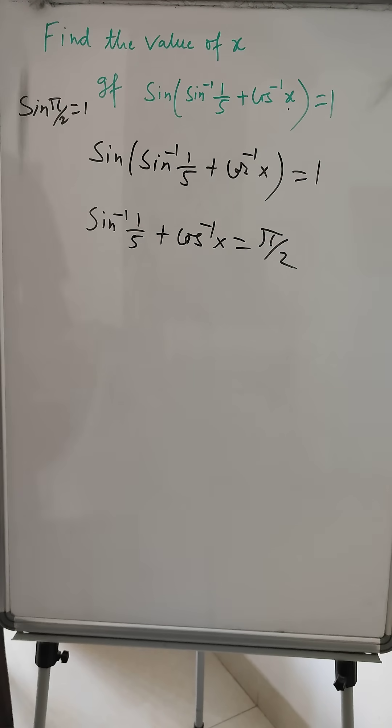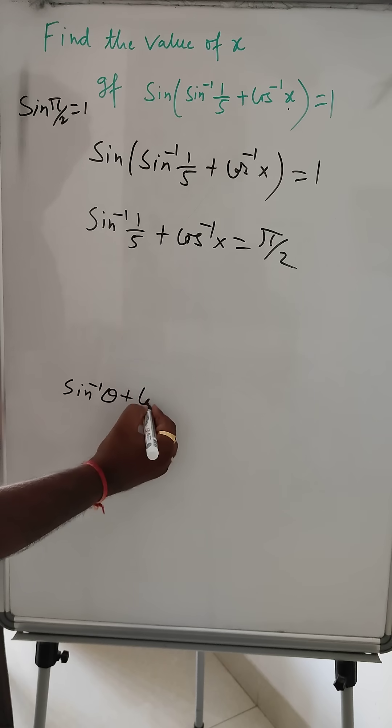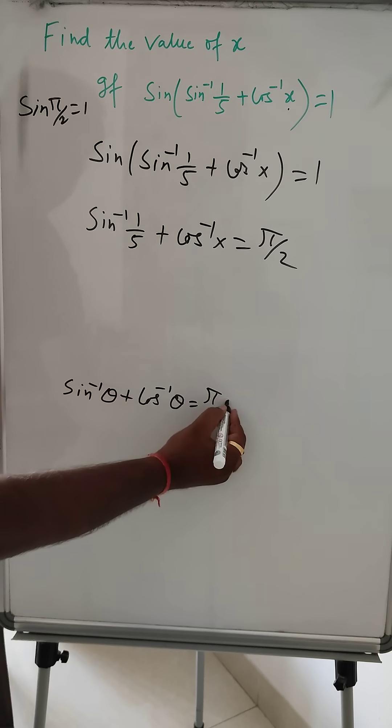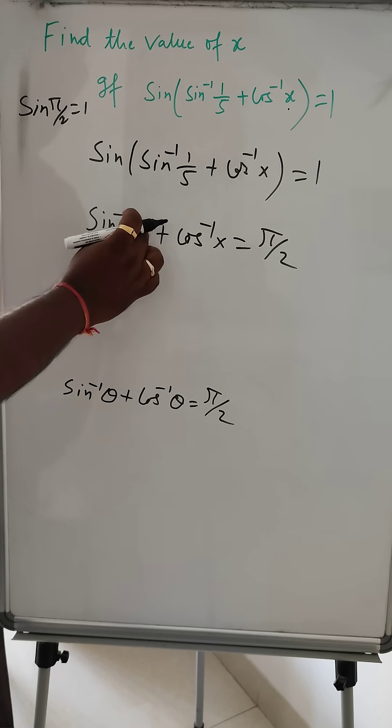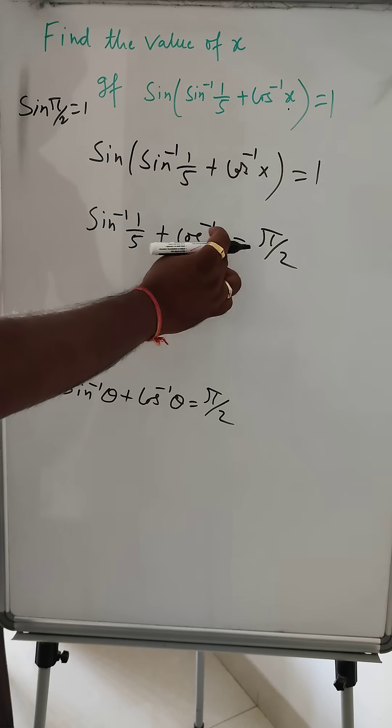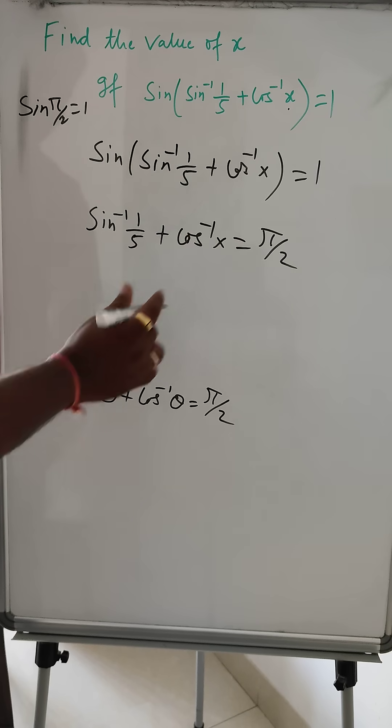Now, there is a formula that sin inverse θ plus cos inverse θ is equal to π by 2. We know this, so since sin inverse 1 by 5 plus cos inverse x equals π by 2, this means 1 by 5 is equal to x. Both 1 by 5 and x will be equal.